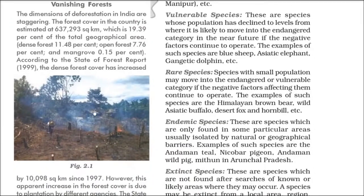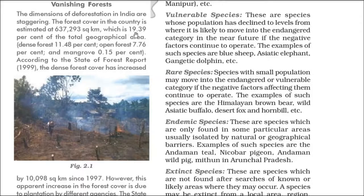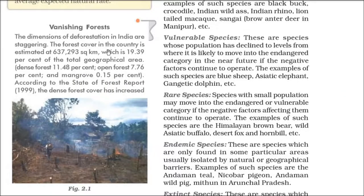Forests are vanishing — we are doing deforestation. The forest cover in the country is estimated at 6,37,293 square kilometers, which is 19.39% of the total geographical area. In 1960-61 it was 18%, then in 2008-09 it was 22%, so this 1999 report gives 19.39%. But we need at least 33% of land under forest cover.